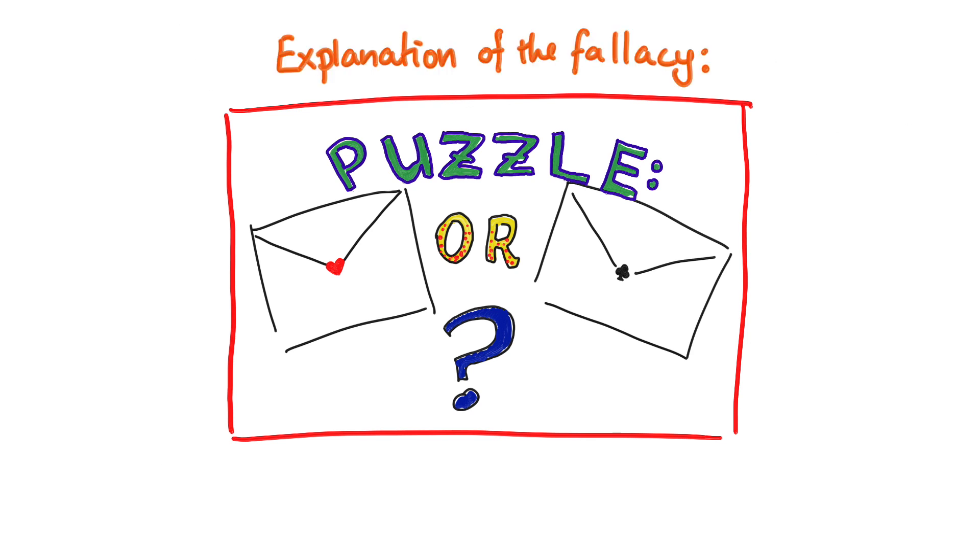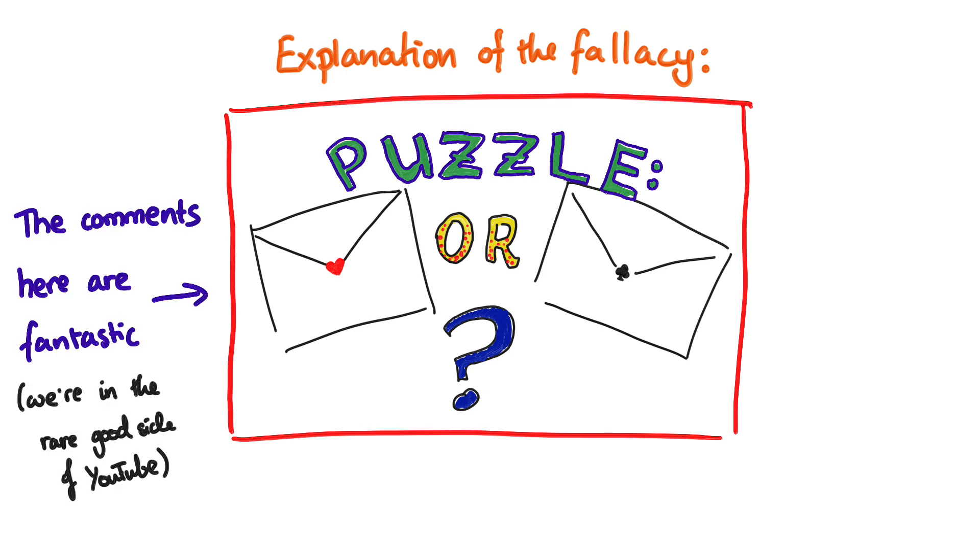Here's the video explaining what's wrong with the two envelope fallacy. I read a lot of different solutions from you guys, but this is the one that's most satisfying for me.